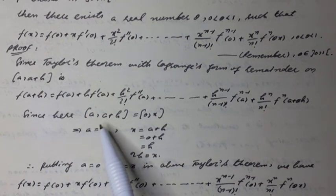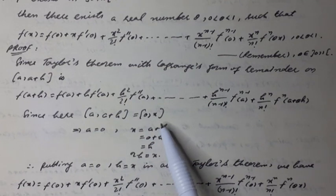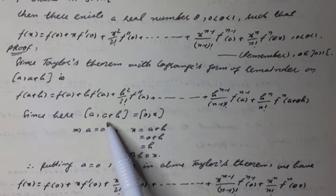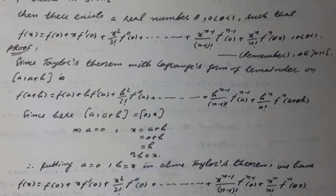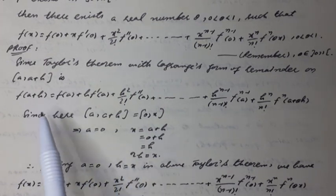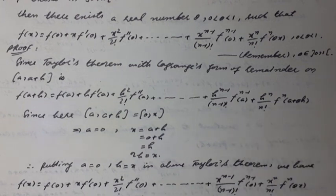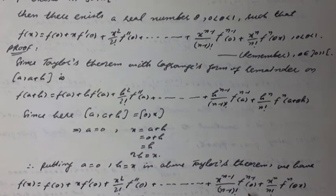Since the closed interval [a, a+h] corresponds to [0, x], we have a = 0 and x = a+h = 0+h, so h = x. Putting a = 0 and h = x into Taylor's theorem, we obtain: f(x) = f(0) + x·f'(0) + x²/2!·f''(0) + ... + x^(n-1)/(n-1)!·f^(n-1)(0) + x^n/n!·f^(n)(θx). Hence the proof is complete.